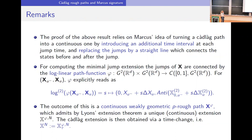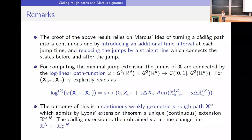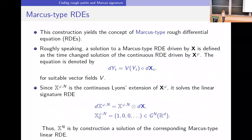The idea relies on the Marcus concept of turning a Cadlàg path into a continuous one by introducing an additional time interval [0,1], replacing each jump by a straight line connecting the state before and after the jump. Explicitly, one has a log-linear path functional defined on the product of the group; connecting jumps this way yields a continuous weakly geometric rough path, denoted X^φ_n, and the Cadlàg extension is obtained via time change.